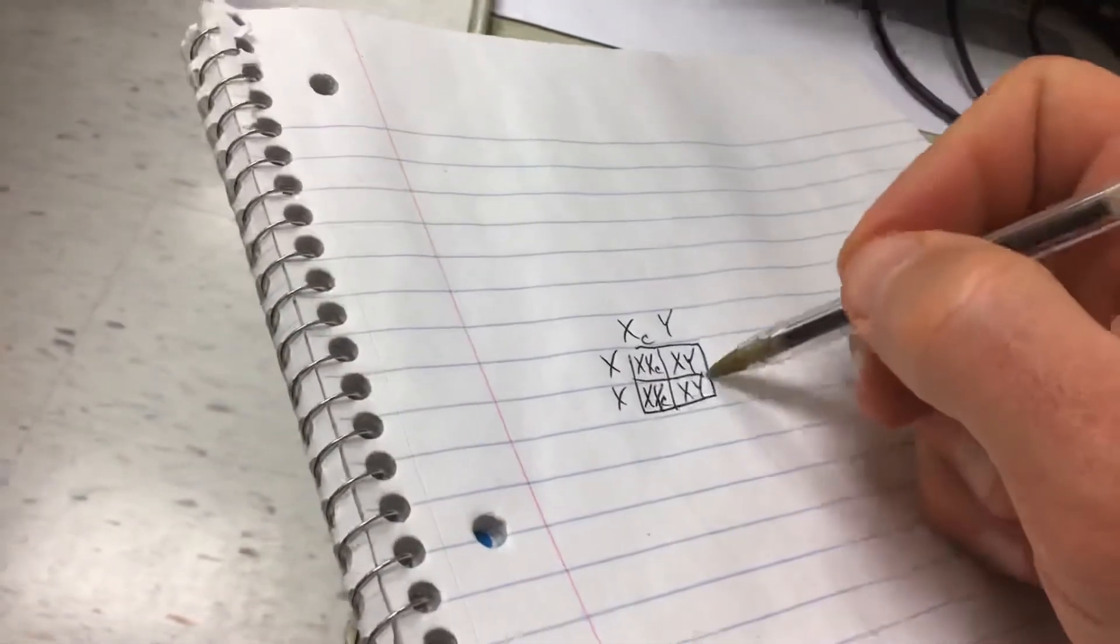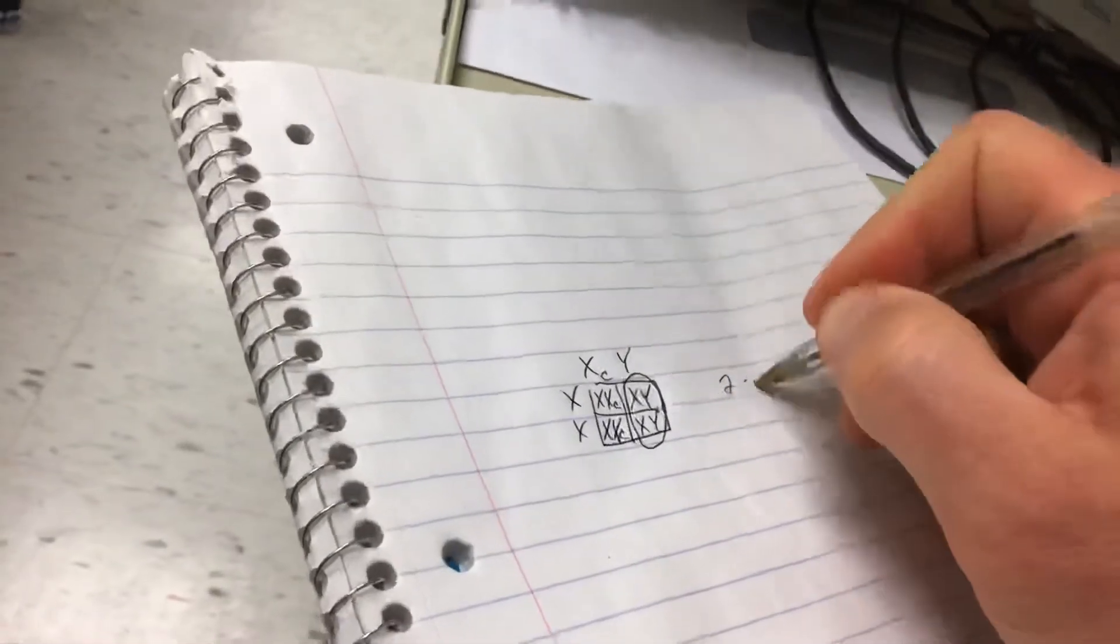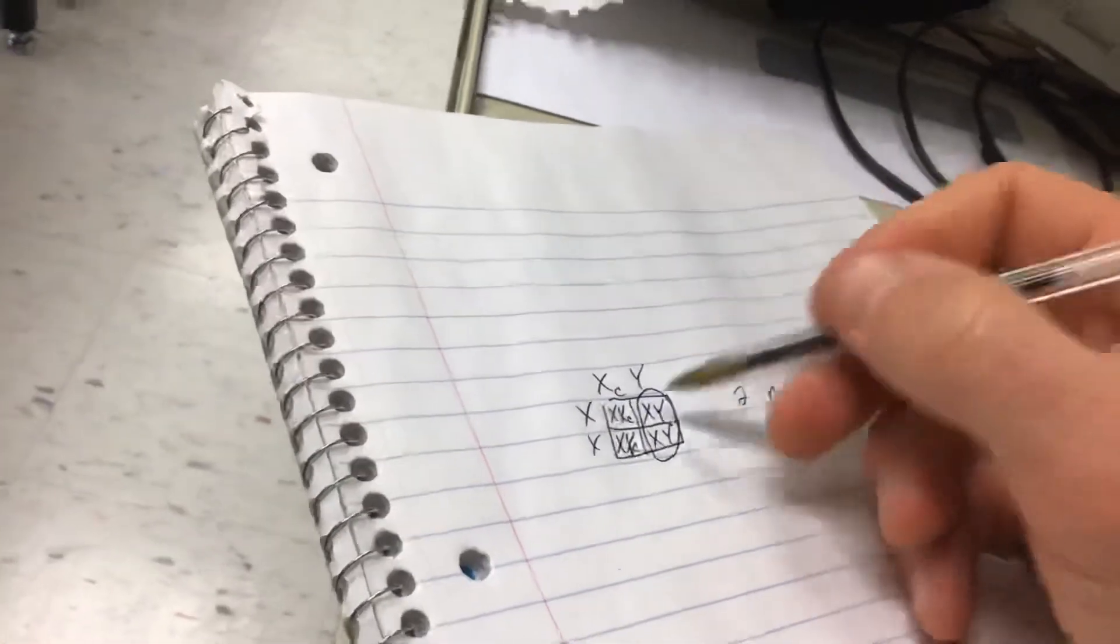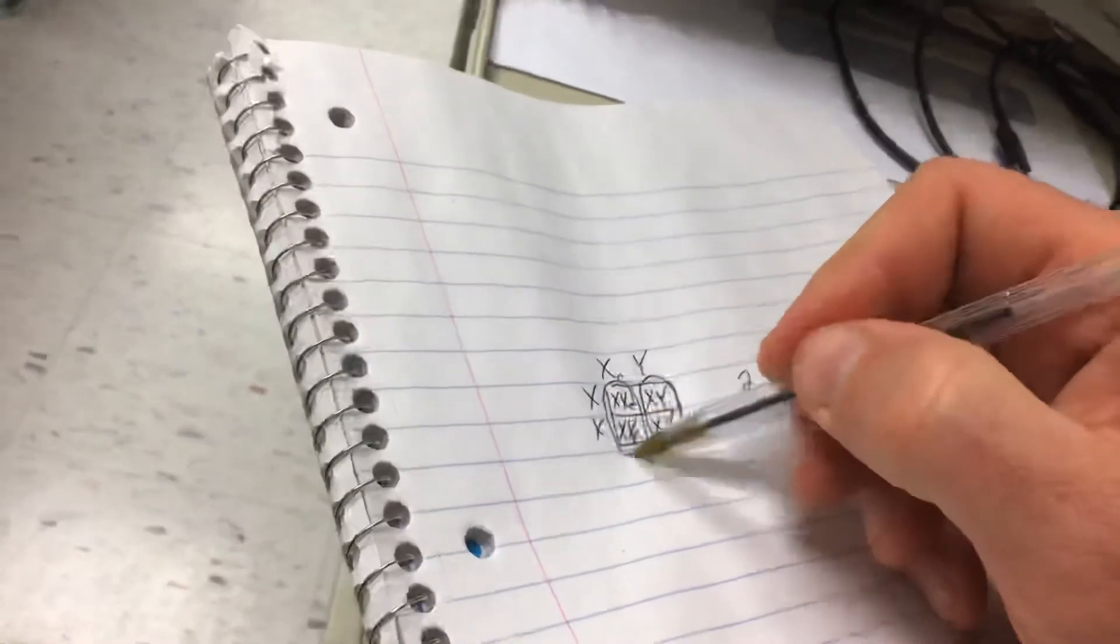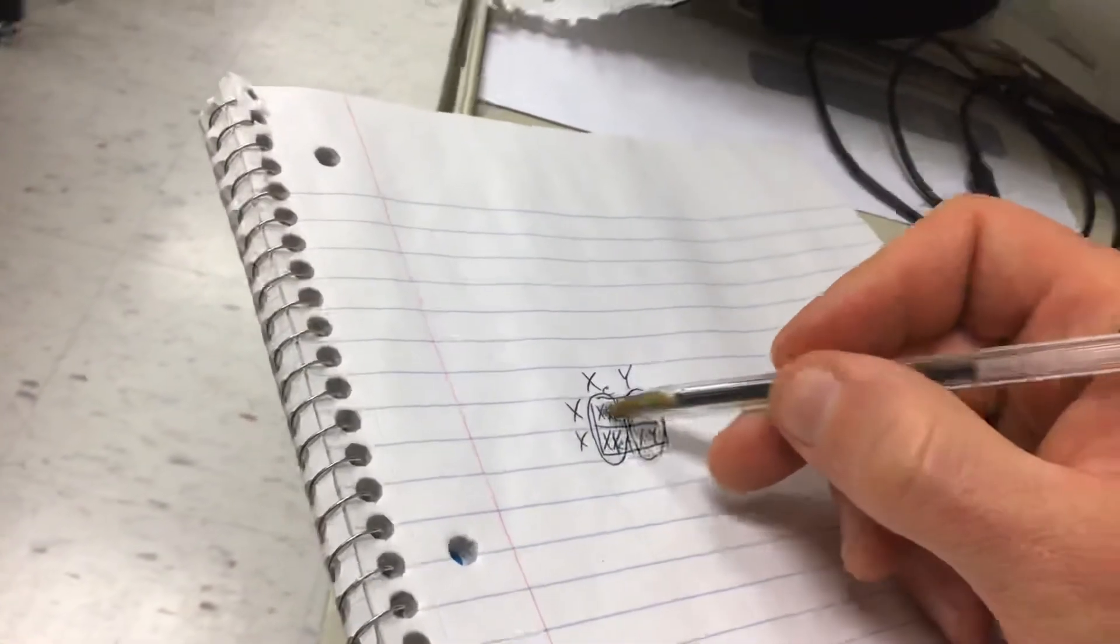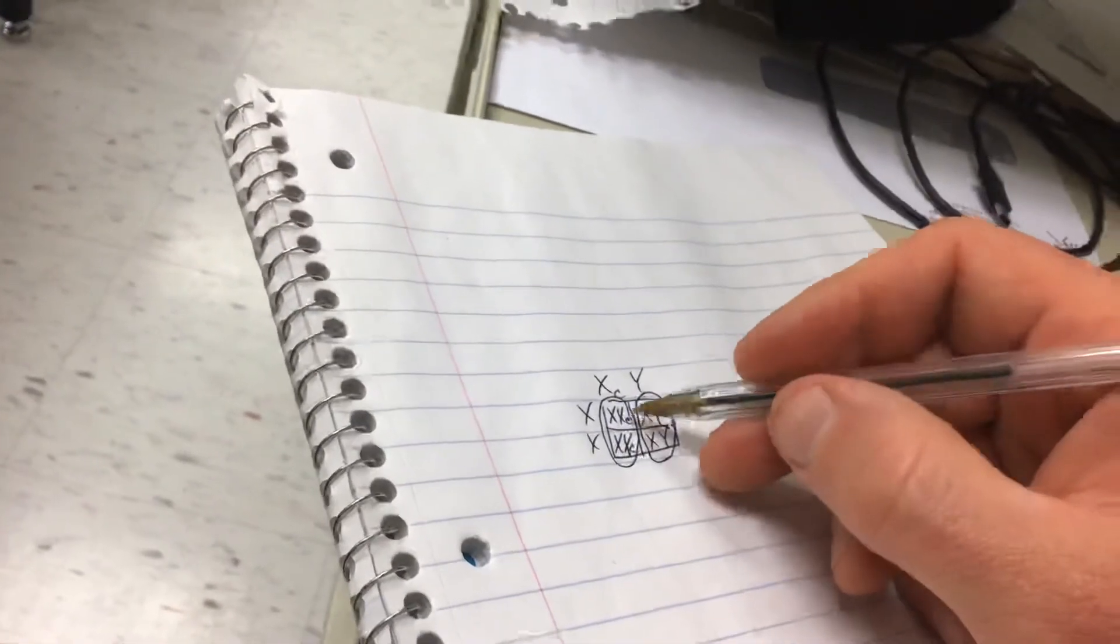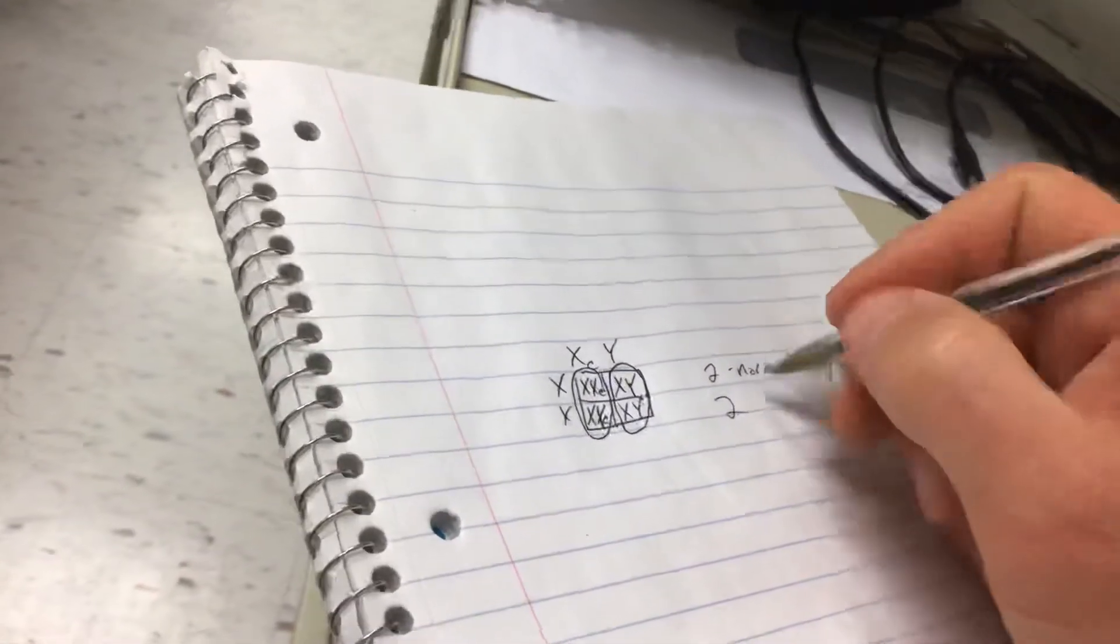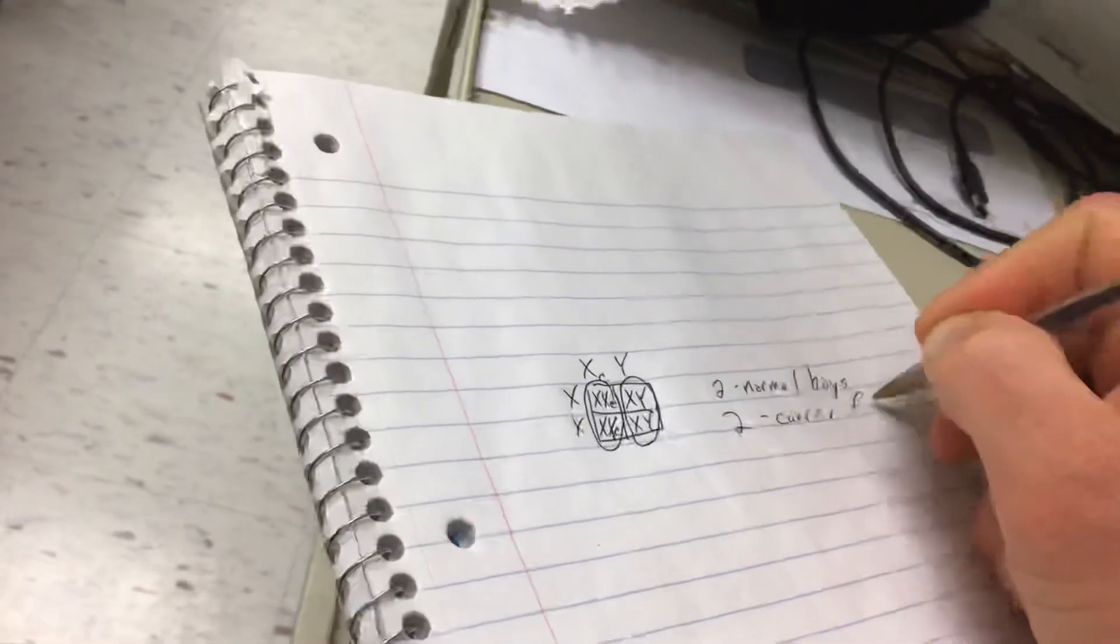We end up with two boys, and these are two normal boys. There's no colorblindness there. Then we have two ladies, and these would be carriers. They have a normal X, and they have a carrier, or they have an X with the colorblind gene. So then we have two carrier females.